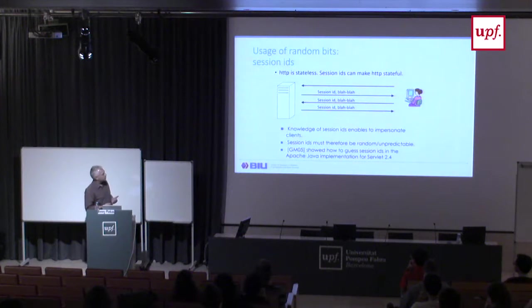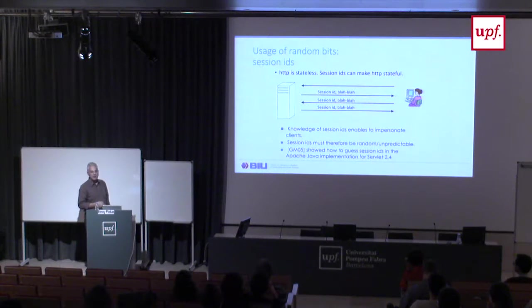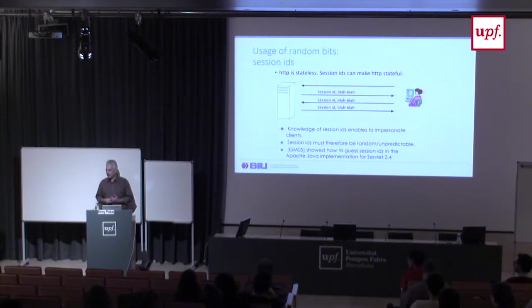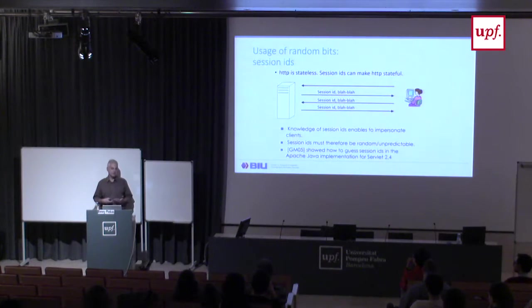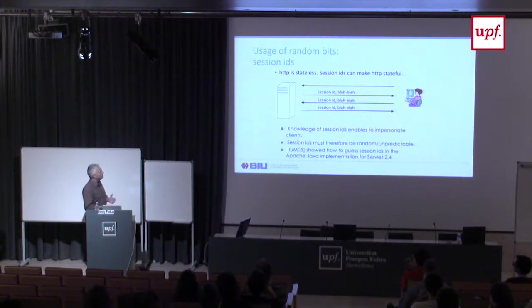Tzvika Guterman and Dalia Malachi showed in 2005, specifically on the Apache Java implementation, that these session IDs were not random. The guys who implemented the server had a lot of things on their mind. It's not realistic to expect them to generate random numbers properly. So someone — probably the operating system — has to provide good random numbers for them, because they need to ship things quickly.